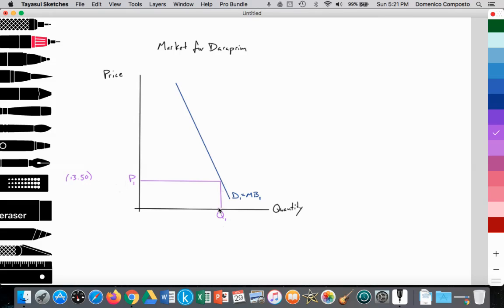Price times quantity. We don't know what the quantity is. We'll assume perhaps 100,000 consumers, and that would generate the total revenue for this area. But then he raises price by 5,455.56%.